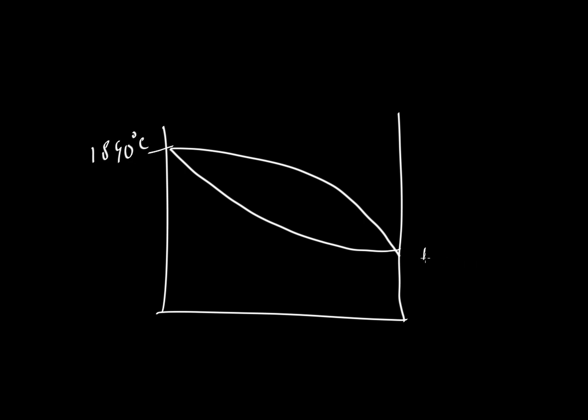If we redraw the whole thing, we would have a melting curve that looks something like this, with pure forsterite melting at 1890 degrees centigrade, and pure fayalite melting at something close to 1205. But for anything that is a mixture between forsterite and fayalite, then we would have a melting interval.